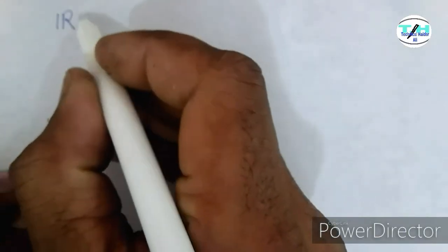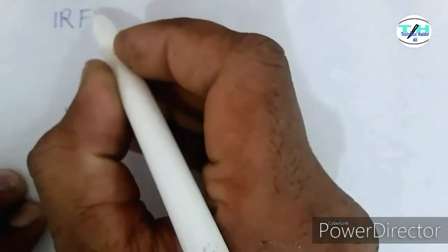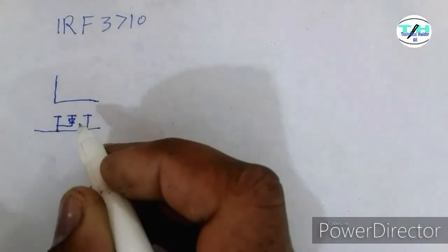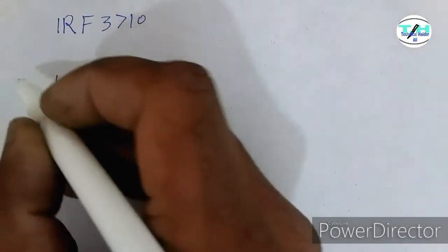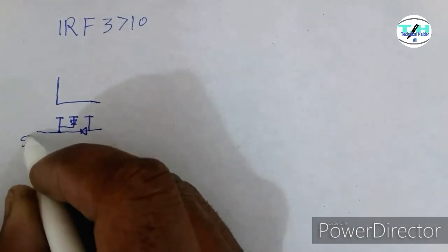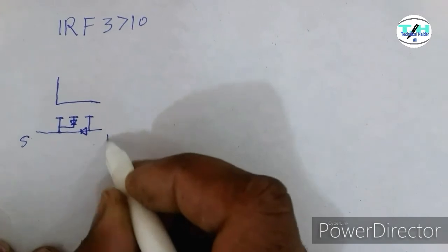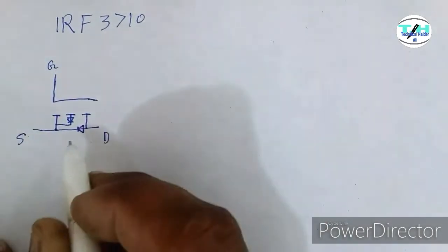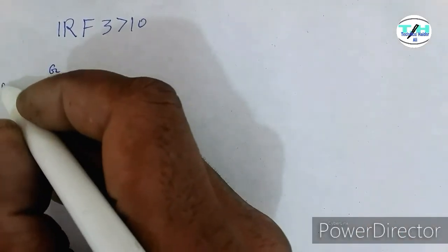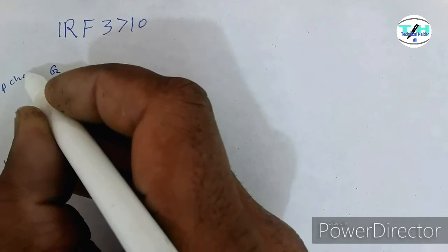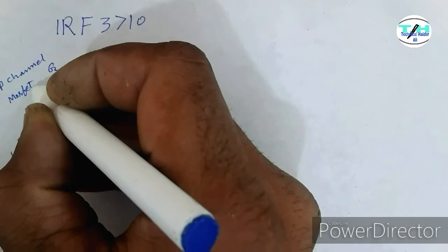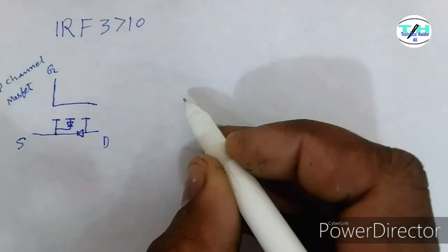IR MOSFET. There are two types of MOSFET. One is the P-channel MOSFET, and the second is the N-channel MOSFET. This is the symbol of the P-channel MOSFET, showing source, drain, and gate. The P-channel MOSFET has three terminals: source, drain, and gate.